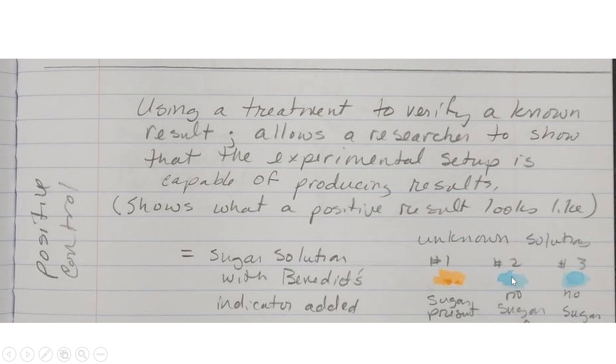So Benedict's solution itself is a blue color. It changes color when sugar is present. So if I take sugar solution and a water solution, I know that that's what they are, and I add Benedict's to both, then I know what a positive result is going to look like. So when I have these unknown solutions, I can compare them and be able to say that, yes, this one shows that there's sugar here and these two show that there's not sugar.